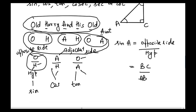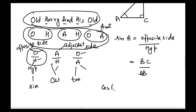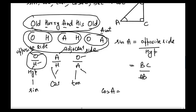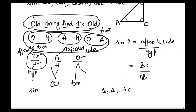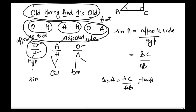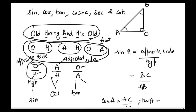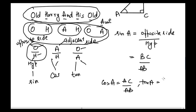For cosine A, cosine is adjacent side divided by hypotenuse. The adjacent side to angle A is AC and the hypotenuse is AB, so cosine A = AC / AB. For tangent A, tangent is opposite over adjacent, so tangent A = BC / AC.